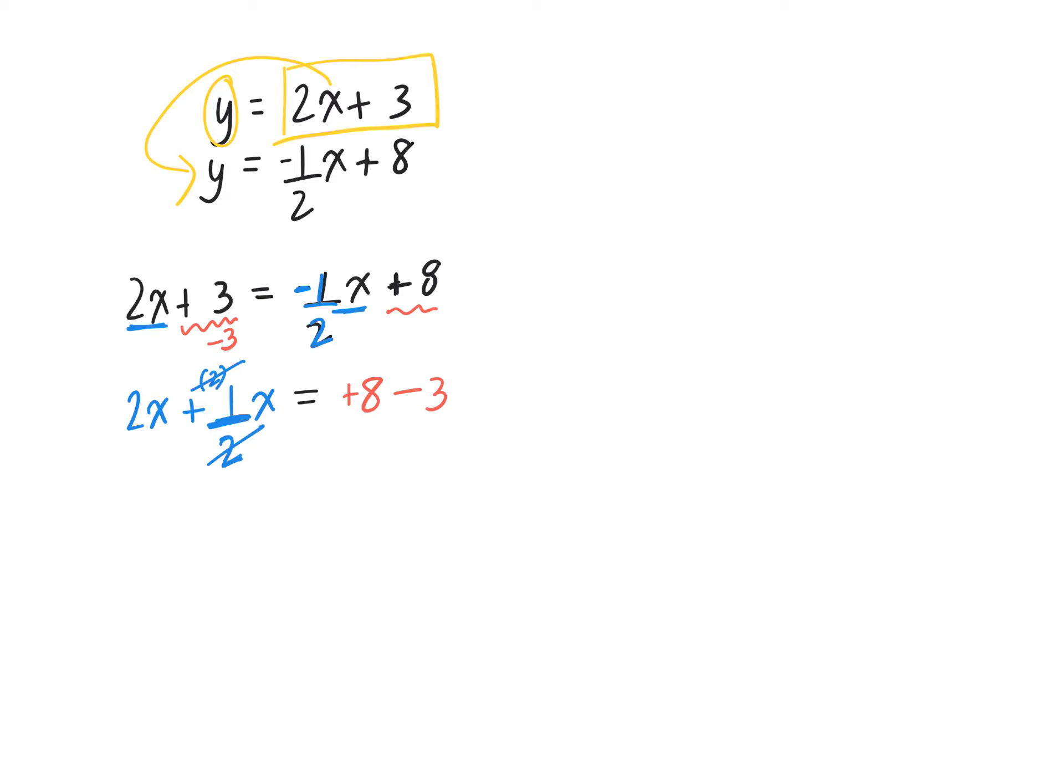If I multiply this by 2, I have to multiply everything on the right side by 2. Don't forget, if you multiply one term by 2, you have to multiply everything by 2. So I'm left with 4x plus 1x equals, well, I should have simplified this first. What's 8 take away 3? That's 5.